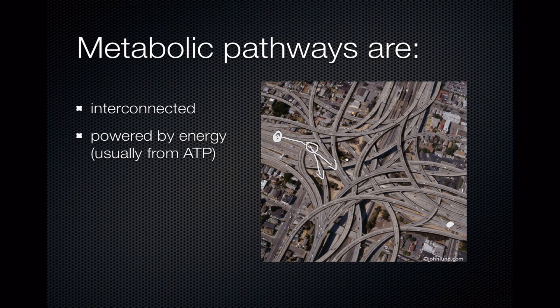Metabolic pathways are all about ATP energy. It's the most basic and pretty much one of the smallest energy molecules in biology, and it's ubiquitous — it's found in just about all living things. ATP is in bacteria, animal cells, plant cells, fungal cells — it's everywhere.